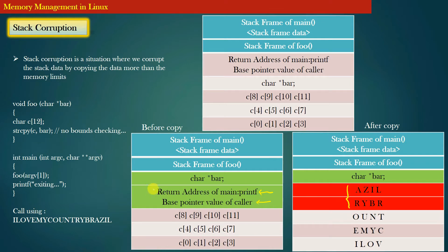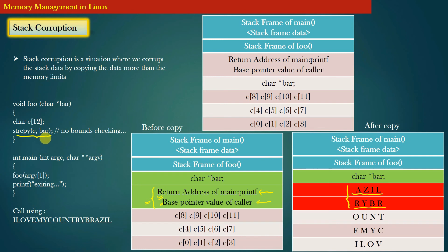Remember, the return address and base pointer value are the information required by the caller function to resume its execution when the callee returns. Since the callee has corrupted these values, when it returns, the caller cannot find the correct return address or base pointer — they have been overwritten by garbage. This is why the program crashes. The crash happens because we corrupted the return address and base pointer by copying a larger string into a smaller buffer, and when the stack is corrupted, any undefined behavior can happen.